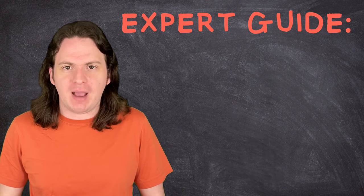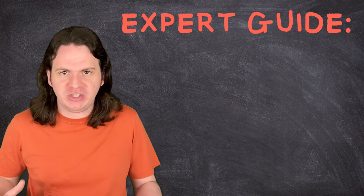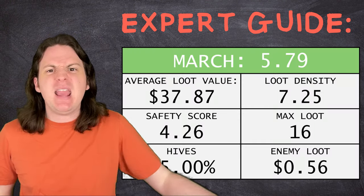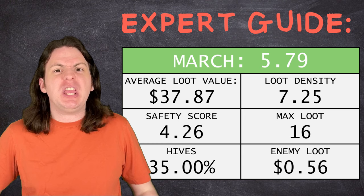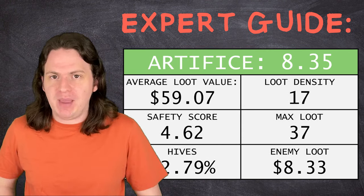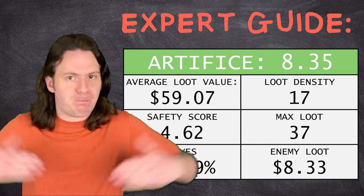And for the true lethal company phenoms out there, the game plan is simple. Step one, go to March. Farm as many hives as you can and clean the inside out. Step two, get to Artifice ASAP. Step three, profit.